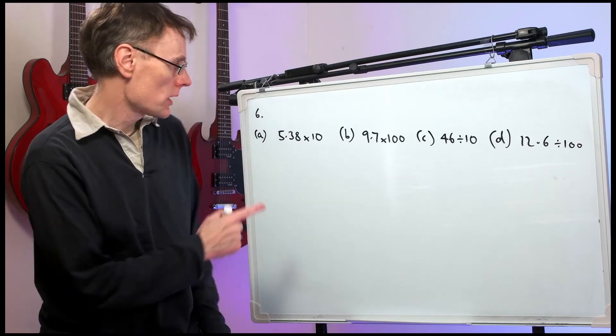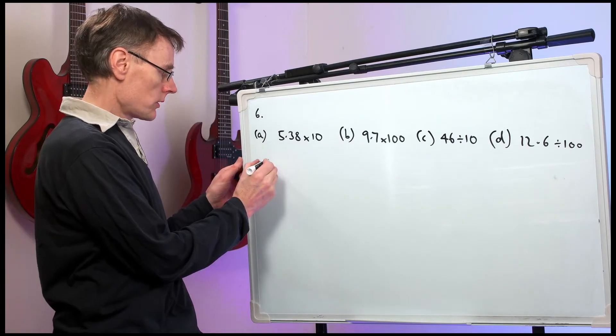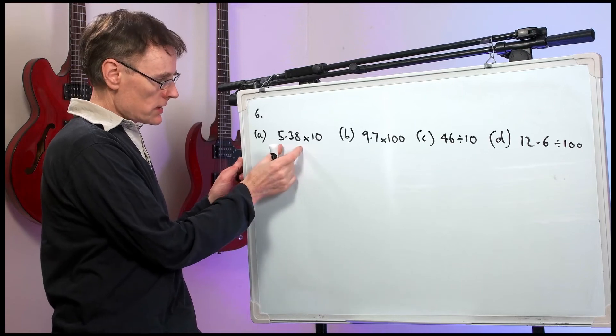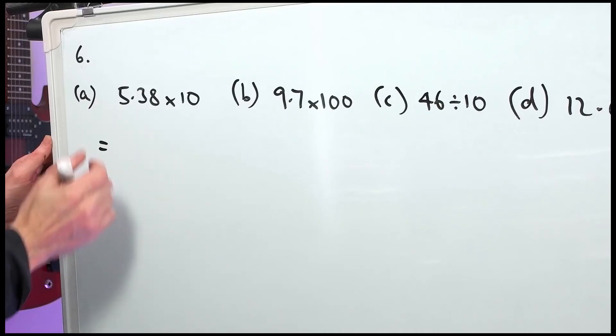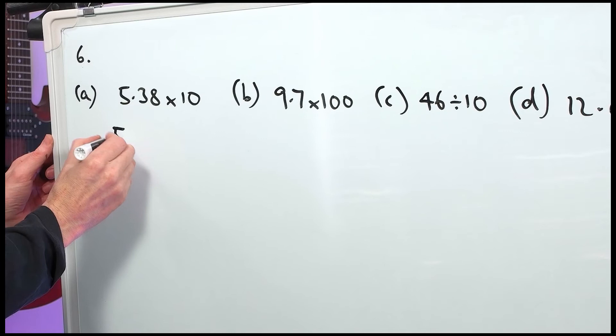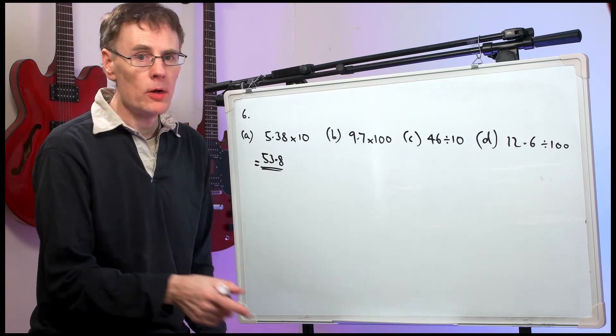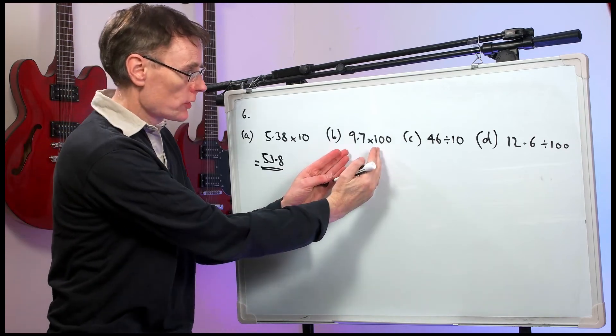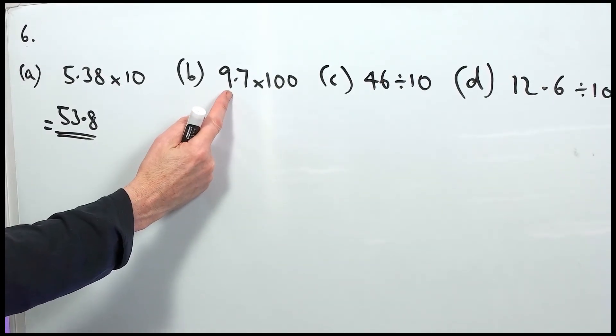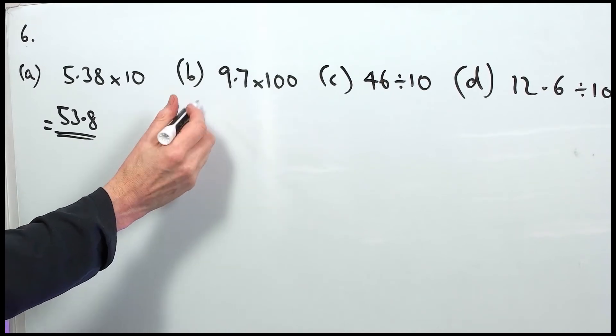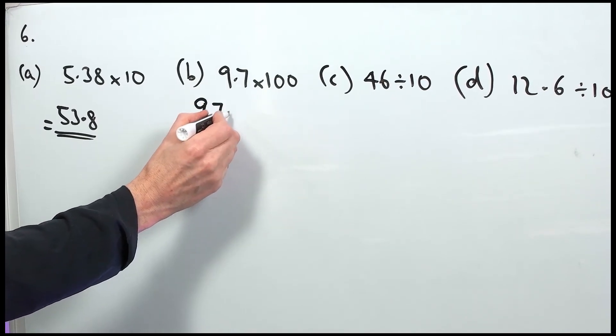Question number 6. We're multiplying and dividing by 10, etc. So, part A. Multiplying by 10 moves all the numbers up one column. So, it's going to be 53.8. Part B. Multiplying by 100 shifts all the numbers two columns up. So, the 9 goes up to 90 and then 900. 970.